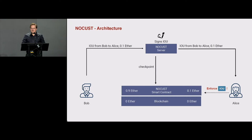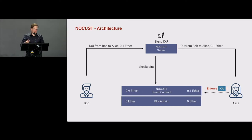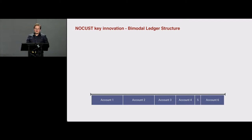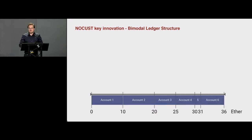Alice can also enforce the IOUs she received, because they're signed by both Bob and the server — she can always enforce them on-chain in case of misbehavior. So what's the key innovation? The fundamental novelty in NOCUST is the bimodal ledger structure. Here you can see a ledger structure of six accounts, where the width of each account represents the amount of stake they have off-chain — ranging from 0 to 36 across six different accounts of different sizes.